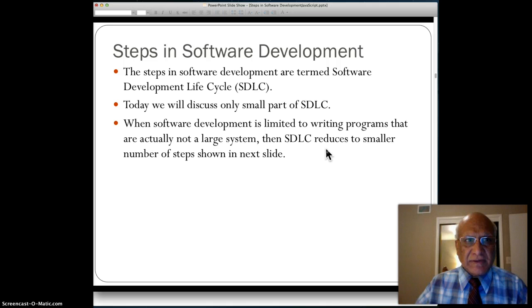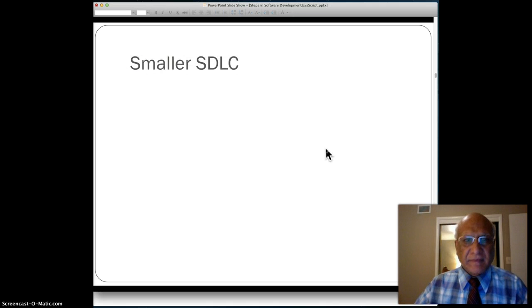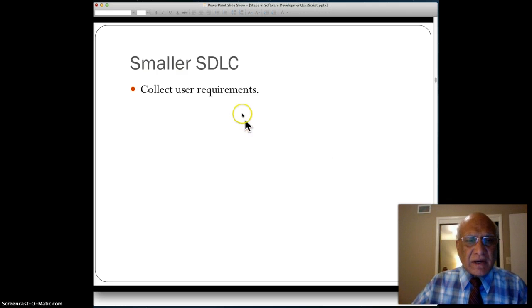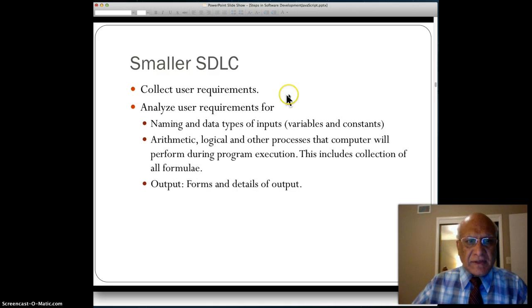This is the smaller SDLC. First item is you have to collect your user requirements. If a program doesn't do what the user wants, then the program is useless. That's why collecting user requirements is important. Then you have to analyze your user requirements for the following items: what data are being input, which could be variables and constants.